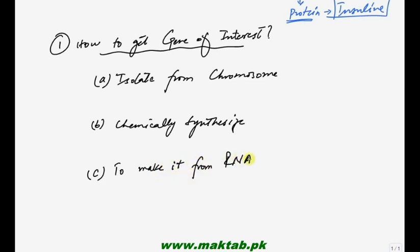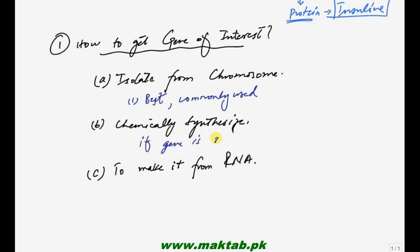तीनों methods में से जो जादा suitable है वो first one है - isolate from chromosome - यही commonly used procedure है। अगर gene small है तो synthesize कर सकते हैं। RNA वाली facility अगर available है, हालांकि यह काफी difficult process है - RNA से वापस DNA generate करने के लिए reverse transcriptase enzyme use होती है, जो HIV virus में मौजूद होती है। सबसे best और commonly used: isolate from chromosome।